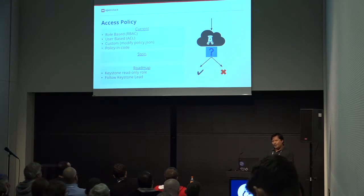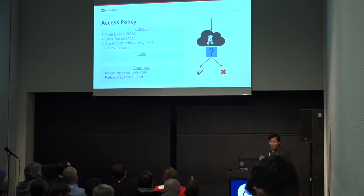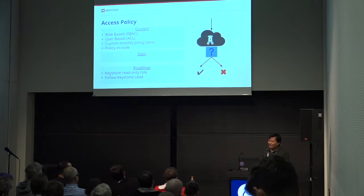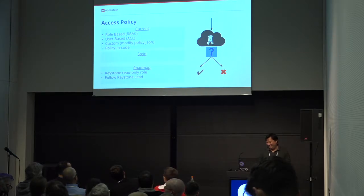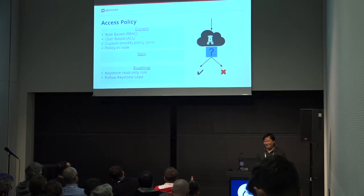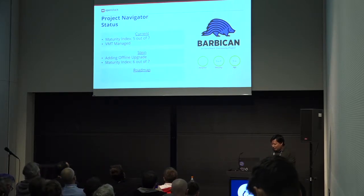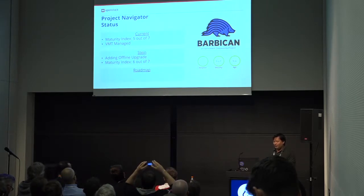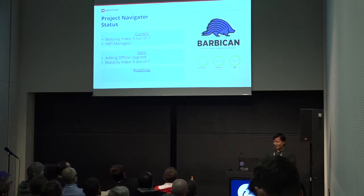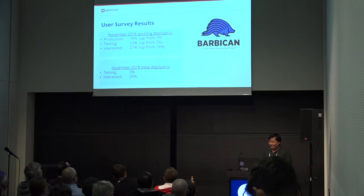All policy is in code — it's just overwrites you put in your policy.json. In the future there will be a read-only role that Keystone has been discussing; we actually have a similar role called 'auditor' and we'll align with whatever Keystone implements. On maturity, we've been at five out of seven for a while; finishing the offline upgrade work should bring us to six out of seven.